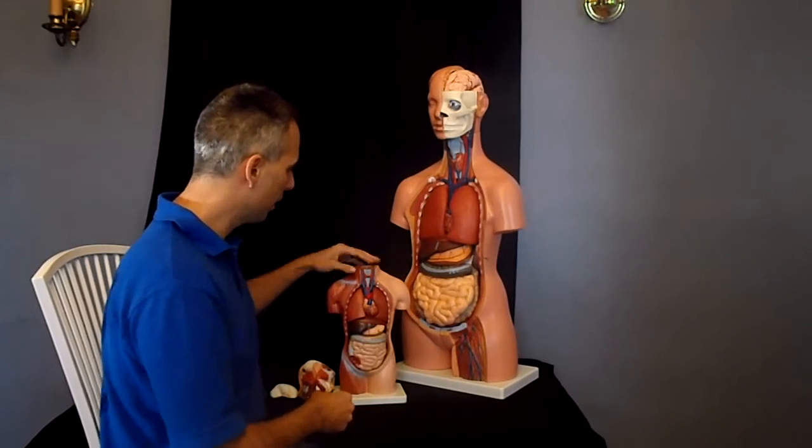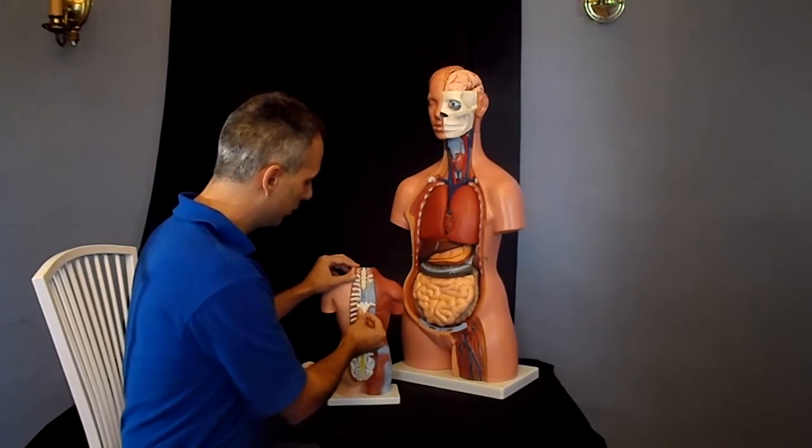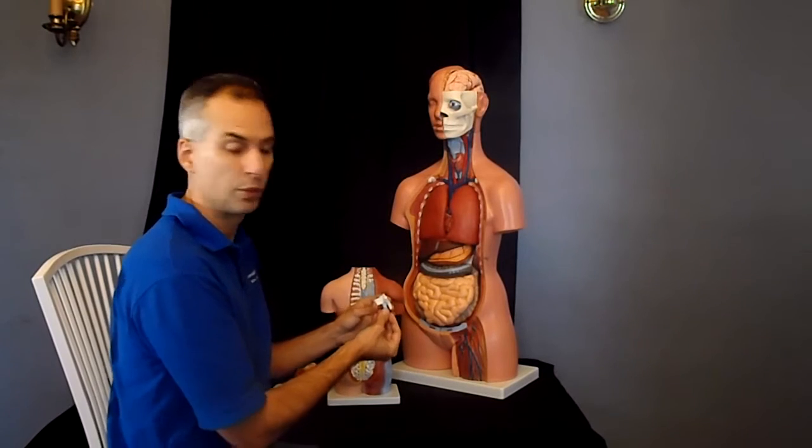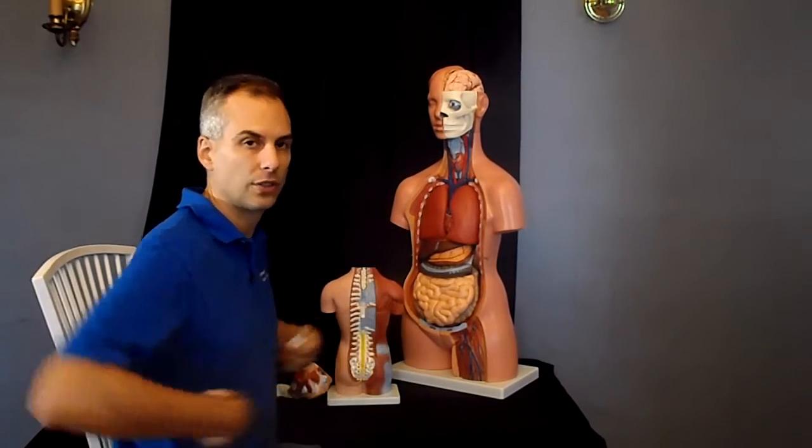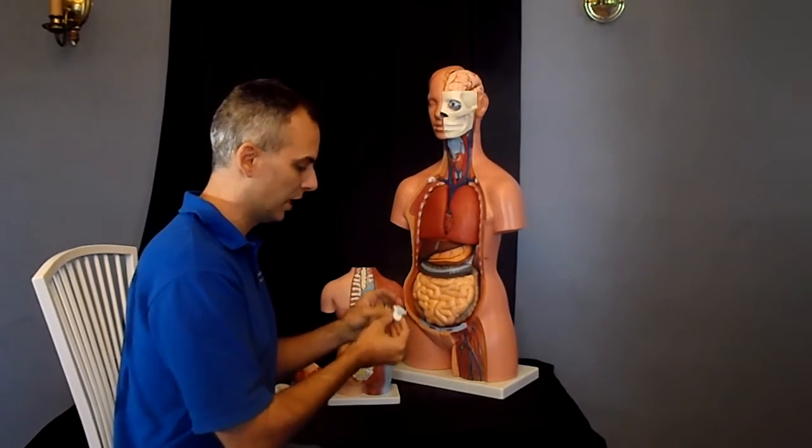Moving across the body, around to the back, we have a removable vertebrae with an included spinal column segment. This is one of the thoracic vertebrae, one of the vertebrae that houses the ribs that then wrap around to the sternum on the opposite side.